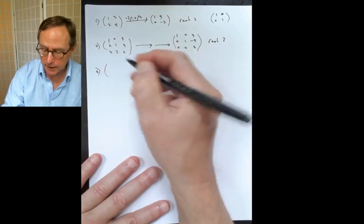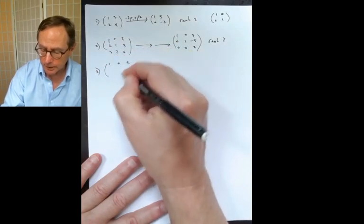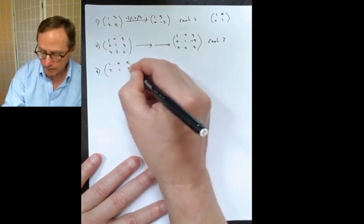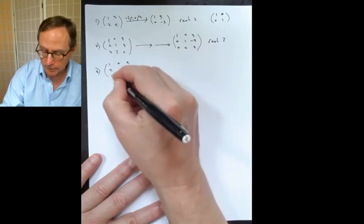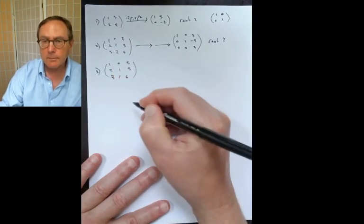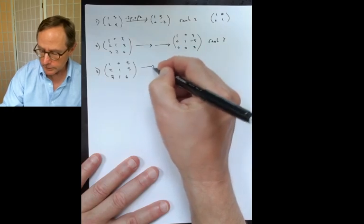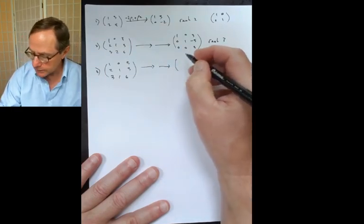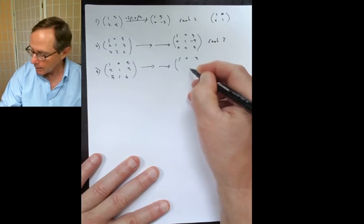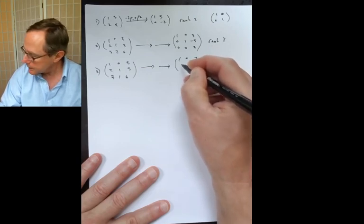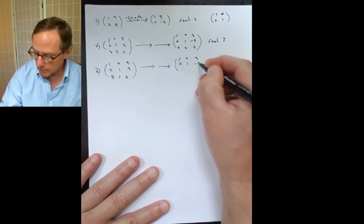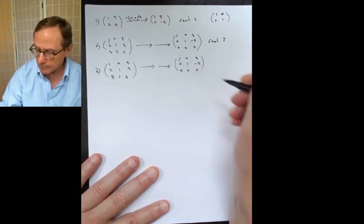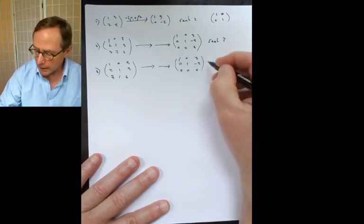For number three, I have a variant on number two: [1, 0, 3; 2, 1, 3; 3, 1, 6]. Gauss's method gives you [1, 0, 3; 0, 1, -3; 0, 0, 0]. So here the rank is two. If you were to do the block partial identity, you'd see two ones and everybody else zeros.